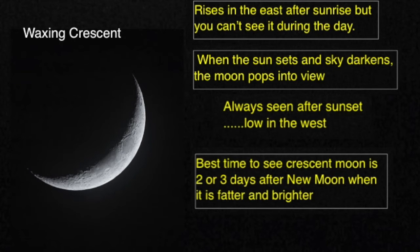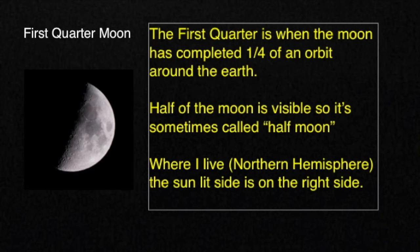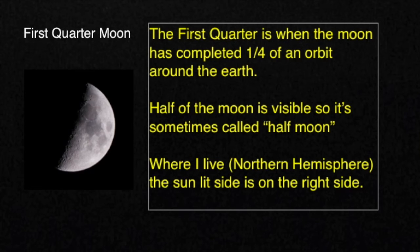The moon continues to grow or wax until we reach first quarter moon. The first quarter is when the moon has completed a quarter of an orbit around the Earth. Half of the moon is visible so it's sometimes called the half moon. Where I live in the northern hemisphere, the sunlit side is on the right side.